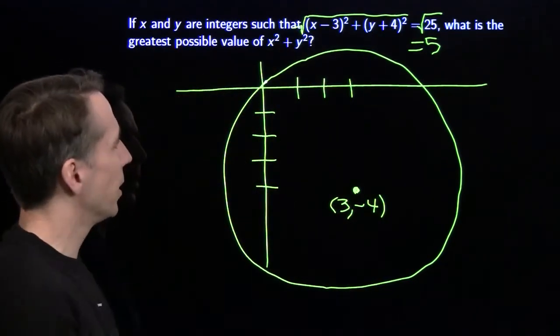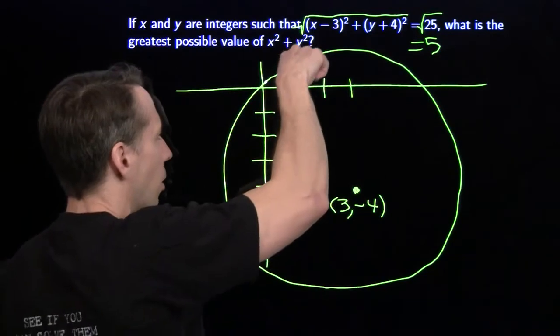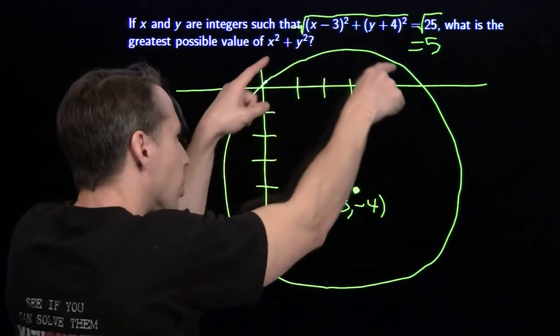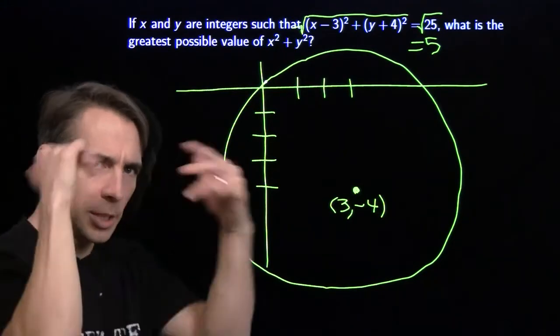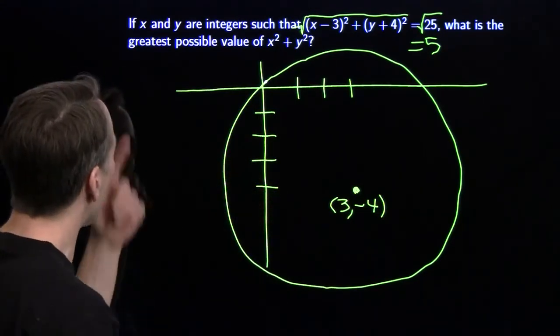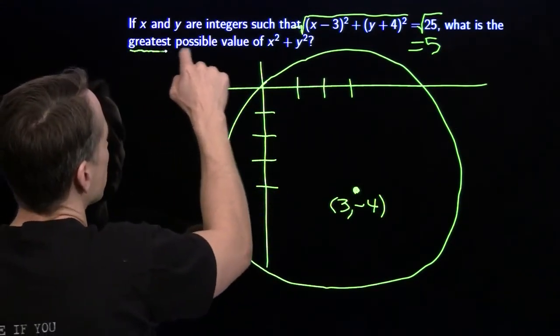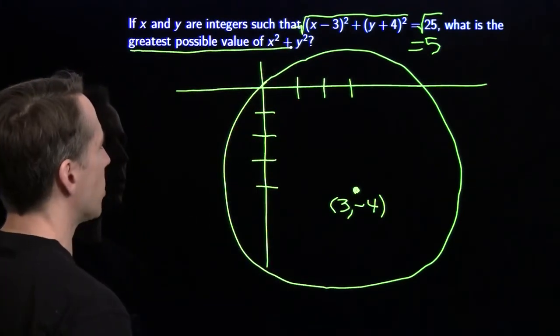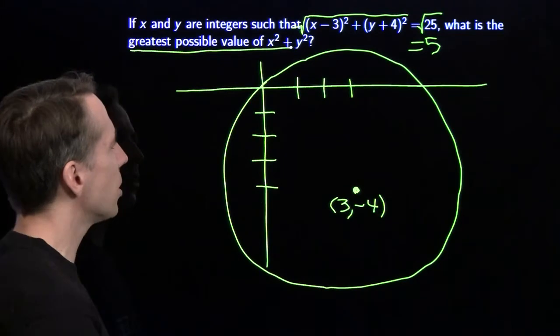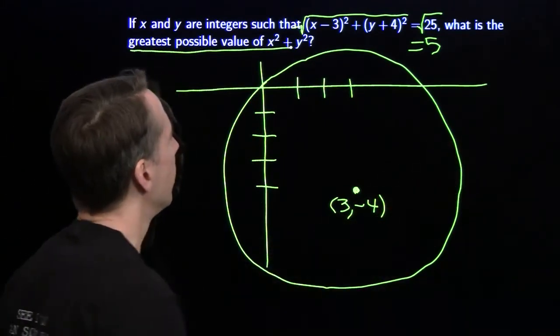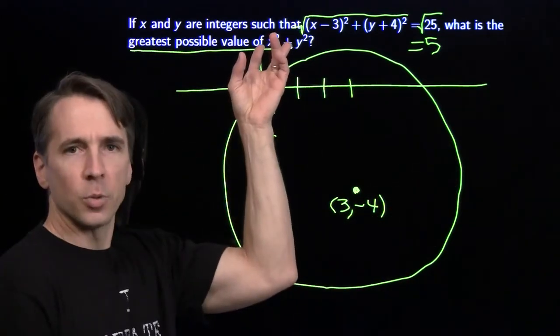Alright, and we know that X and Y are integers, so I could go and try to figure out what are all the points where both coordinates are integers on this. But let's read the rest of the question, keep our eye on the ball, try to figure out what we're going for. We want the greatest possible value of X squared plus Y squared. But now let's think about this X squared plus Y squared. If we have some point out here that's XY, what does that X squared plus Y squared represent?